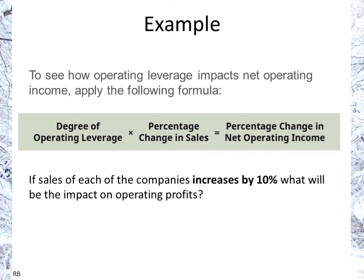The degree of operating leverage is a multiplying factor: DOL times the percentage change in sales tells you the percentage change in net operating income — that's why it's a magnifying function. The DOL will always be at least 1, because if you have no fixed costs (like Safety First), then your contribution margin equals your operating income. So DOL is always at least 1, and you multiply it by the percentage change in sales to get the percentage change in net operating income, assuming cost structures stay the same.